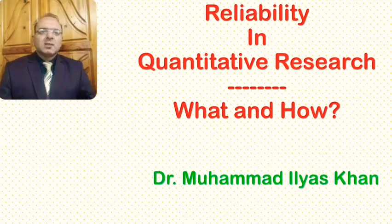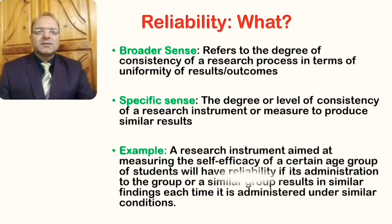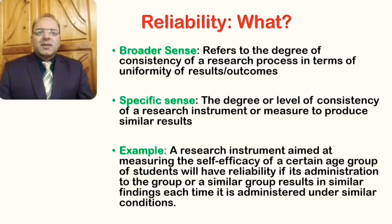Let us discuss what reliability means in the context of quantitative studies in social sciences. In a broader sense, reliability refers to the degree of consistency of a research process in terms of uniformity of results and outcomes. It is expected that the research process should lead to consistent and uniform results, and a research study will be reliable if it gives consistent and uniform results across time.